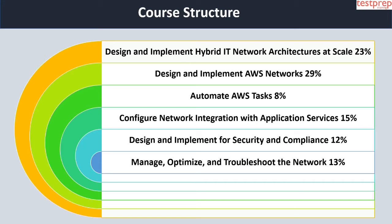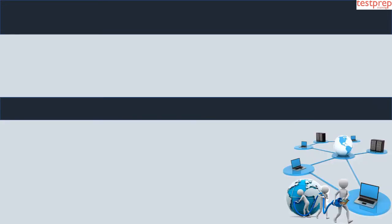Course structure: first, Design and Implement Hybrid IT Network Architectures at Scale — 23% weightage. Second, Design and Implement AWS Networks — 29% weightage. Third, Automate AWS Tasks — 8% weightage. Fourth, Configure Network Integration with Application Services — 15% weightage. Fifth, Design and Implement for Security and Compliance — 12% weightage. Sixth, Manage, Optimize, and Troubleshoot the Network — 13% weightage.